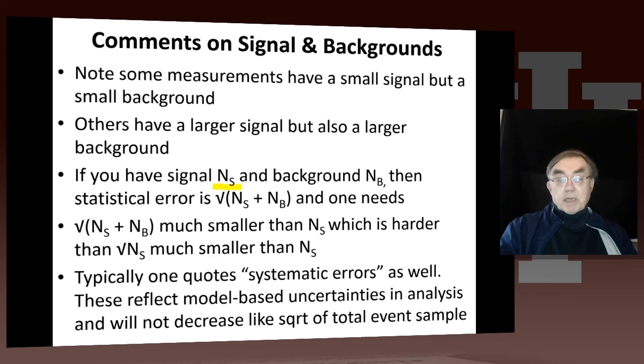When you have a signal measured by a number of events and background measured by a number of events, the statistical error is the square root of the sum of the signal plus the background. You need this error to be much smaller than the signal. When you always have background, this is a much harder problem than making the square root of the signal smaller than the signal. Probably 50 events, or 49, with square root of 7, that's pretty significant if there was no background. But if the background is bigger than the signal, as we saw for the CMS data, you need thousands of events in the signal to distinguish it from the background.